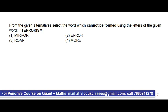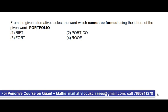Next problem: from the given alternatives, select the word which cannot be formed using the letters of TERRORISM. MIRROR — M, I, double R, O — can be formed. ERROR is clearly present in TERRORISM. ROAR contains A, which is not in TERRORISM, so ROAR cannot be formed. So our answer is the third option. It's a very simple way of solving the problem.